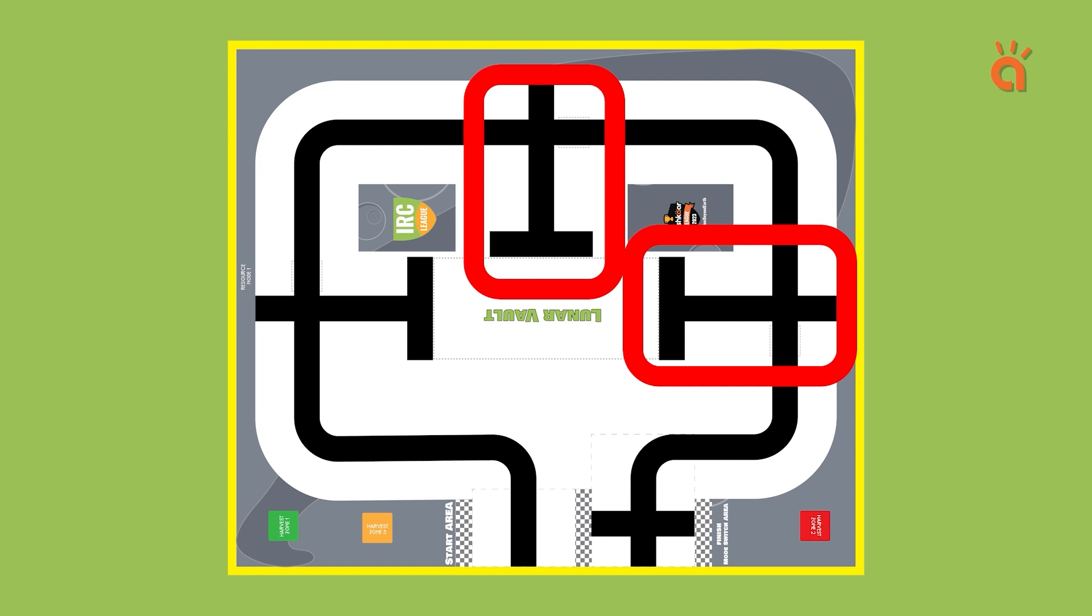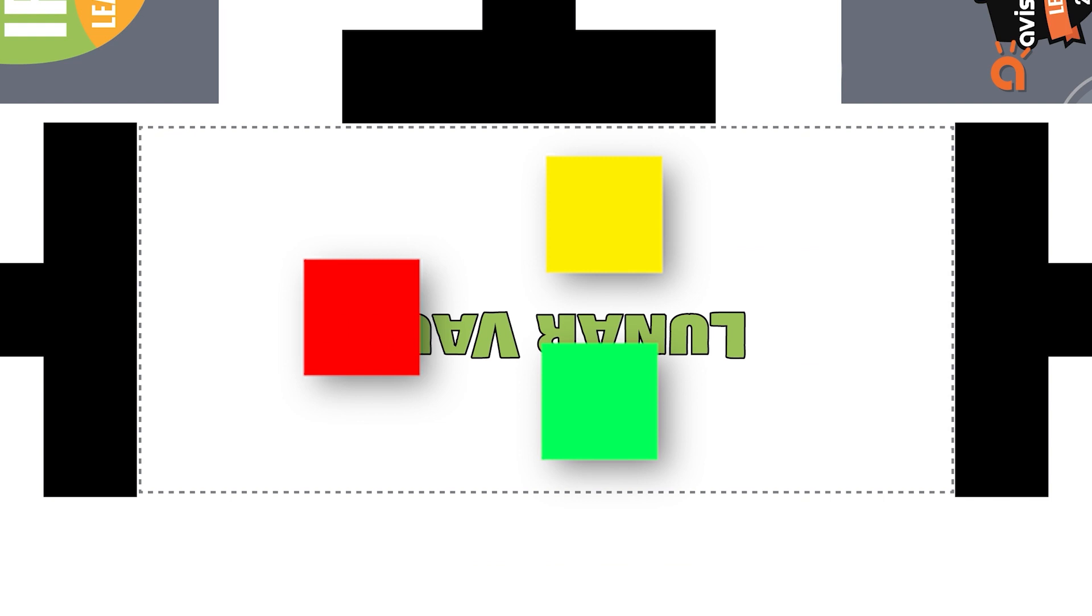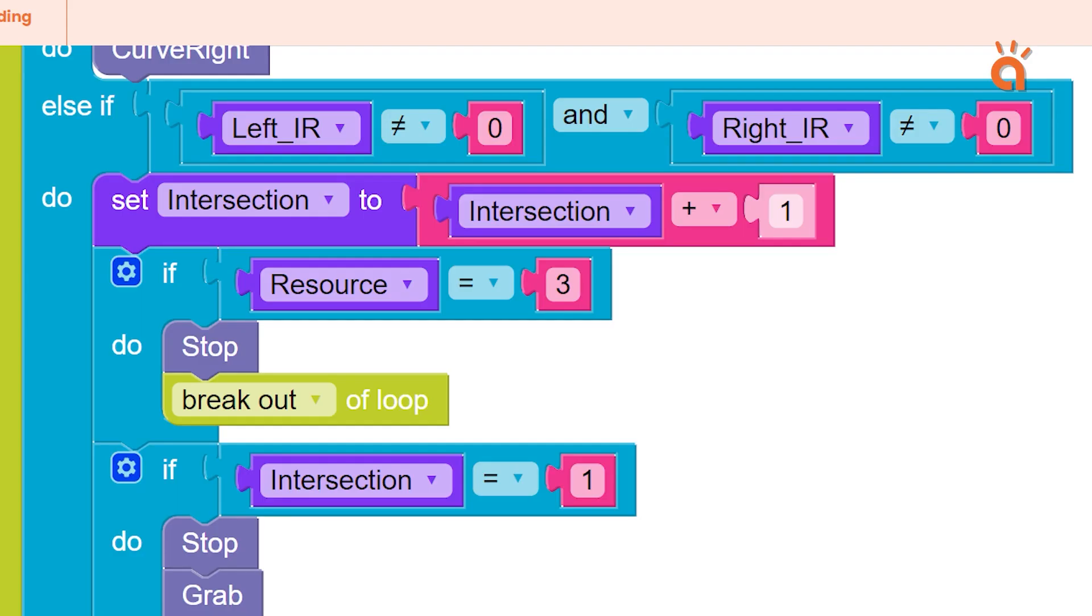This action will be repeated two more times for resource junctions 2 and 3. Now, when we have placed all the three resources, we can add one more condition to stop the robot. When the resource variable is 3 and the sensor detects a black intersection, the robot will be stopped.